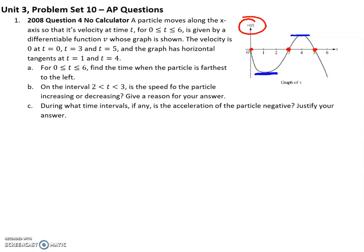The first thing they ask me is, from 0 to 6, find the time when the particle is farthest to the left. Remember, moving to the left is when I have a speed that's negative. You have a negative speed this whole time, so you're going left all the way until you switch directions at 3. So I'm furthest left when time equals 3 because then I switch and I start heading back towards the right.